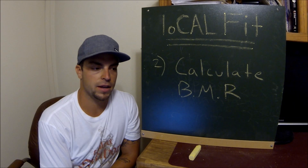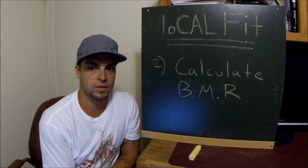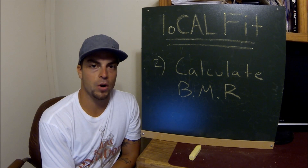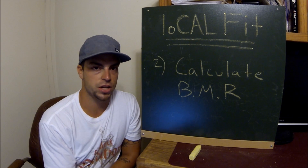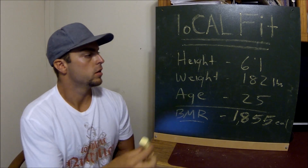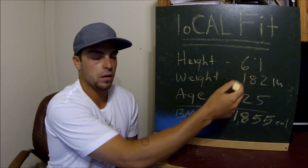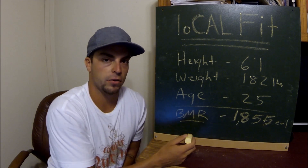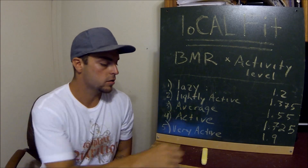I could give you a formula for this but it's really more confusing than it sounds — you'd have to take your height, your weight, convert your weight into kilograms, take your age, and figure it all out. Instead, just Google a BMR calculator; I'll throw a link in the description where you can put in your height, weight, and age and it'll give you your BMR right there. I'm 6'1", 182 pounds, and 25 years old, so my BMR comes out to 1,855 calories a day.